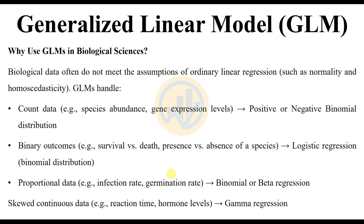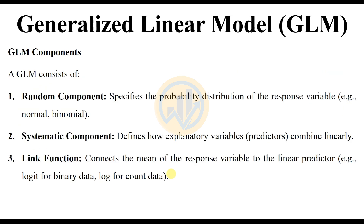For proportional data, binomial or beta regression is used. For continuous data such as reaction time and hormone levels, gamma regression is used. The GLM is composed of three components: the random component, the systematic component, and the link function.